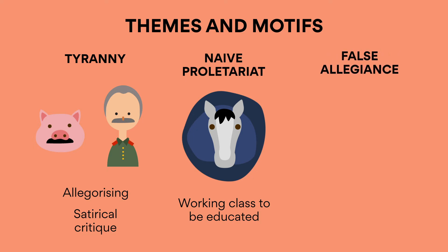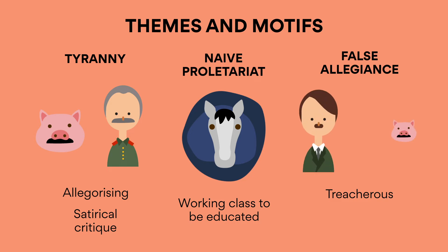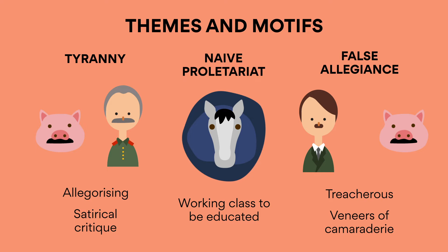False Allegiance. Orwell accurately exhibits treacherous aspects of the human condition in his portrayal of dramatized relationships between humans and animals. Just as the pig rulers of the rebellion eventually betray their own idealistic visions, the theme of alliance is shattered between Frederick and Napoleon when the latter learns that the former has been forging bank notes while buying firewood from him. Thus, Animal Farm depicts the idea that alliances formed in a tyrannical dictatorship are merely veneers of camaraderie, which hide a person's capacity to destroy others in their path towards control.